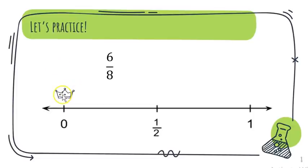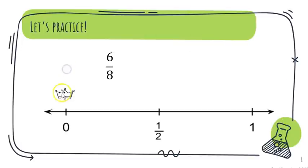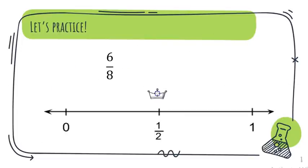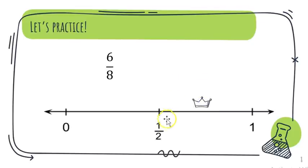If I have six pieces, that's not very close to zero. If I want to find a half, I need half of eight — four plus four is eight — so four-eighths is a half. I have six, so I'm going to place it between a half and a whole.